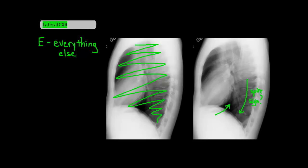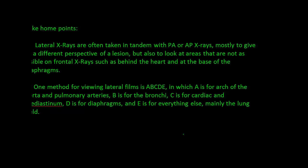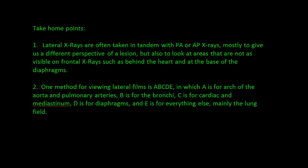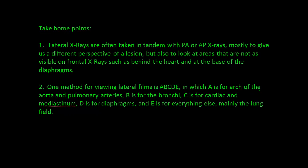For the take-home points: lateral x-rays are often taken in tandem with PA or AP x-rays to give us a different perspective of a lesion and to look at areas not as visible on frontal x-rays. One method for viewing lateral films is ABCDE — A for arch of the aorta and arteries, B for bronchi, C for cardiac and mediastinum, D for diaphragms, and E for everything else.